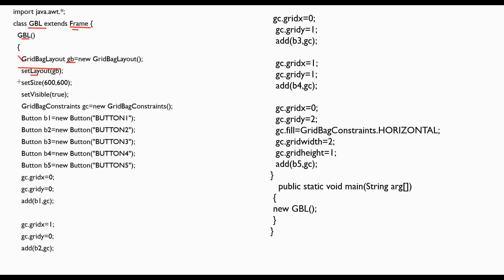After that, setSize and setVisible methods of Frame are used to set the size of the frame and to make the frame visible. Here I created an object gc of GridBagConstraints — don't forget to use the proper capital letters. These are five buttons named as button one, button two, and so on.